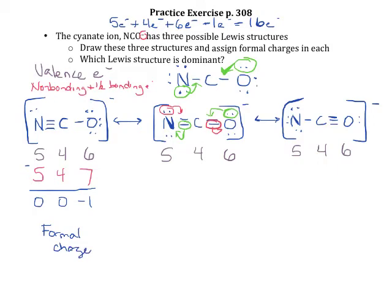For the second structure (N-C≡O)⁻: nitrogen has four non-bonding electrons and four bonding electrons, so half of four is two, plus four is six. Carbon still has eight bonding electrons, so it feels like it has four. Oxygen with the double bond has four bonding electrons, so half is two, plus four non-bonding gives six. The formal charges: nitrogen is five minus six = negative one; carbon is four minus four = zero; oxygen is six minus six = zero.